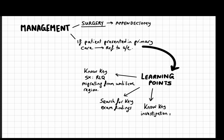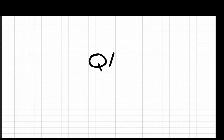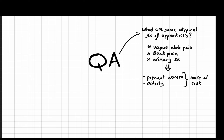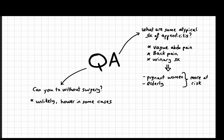The importance of timely surgical intervention cannot be overstated. Now let's address some common questions about appendicitis. What are some atypical presentations? It can sometimes present with vague abdominal pain, back pain, or even urinary symptoms. Those more at risk of atypical presentations are pregnant women and elderly individuals. Can appendicitis be managed non-surgically? Most likely no. However, there are some cases where surgery may be delayed because the patient needs antibiotic treatment first. The success rate is much higher with surgery, so that remains the definitive treatment.